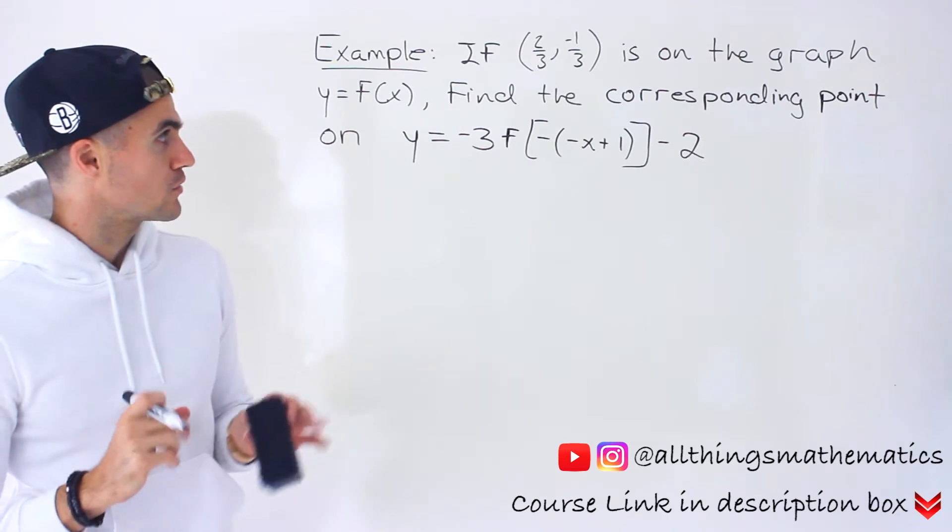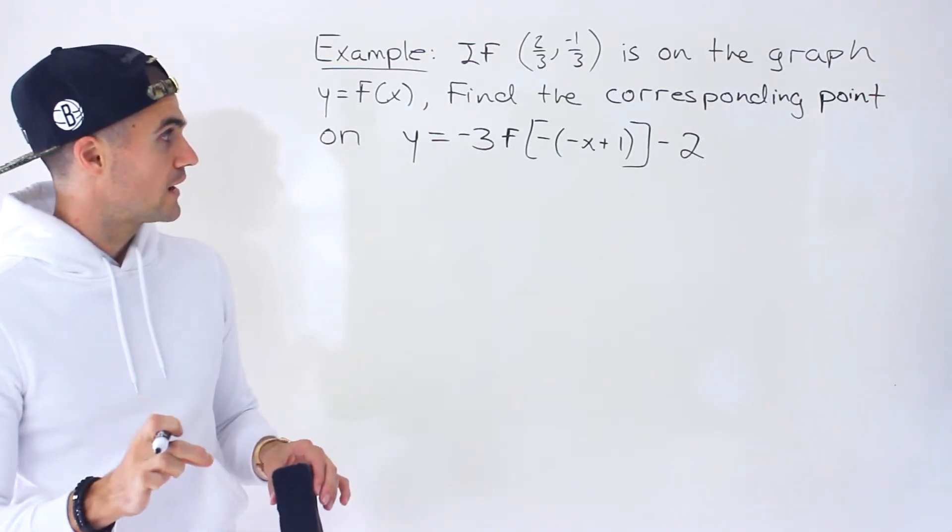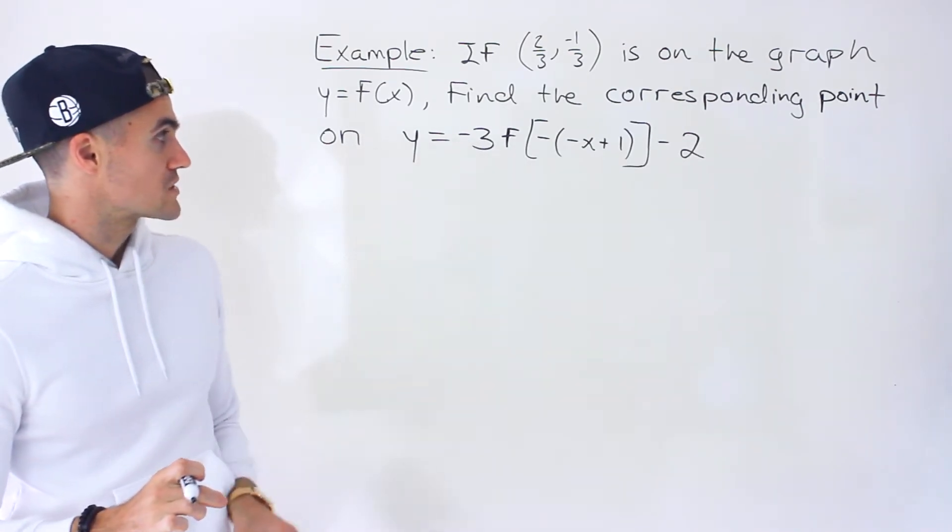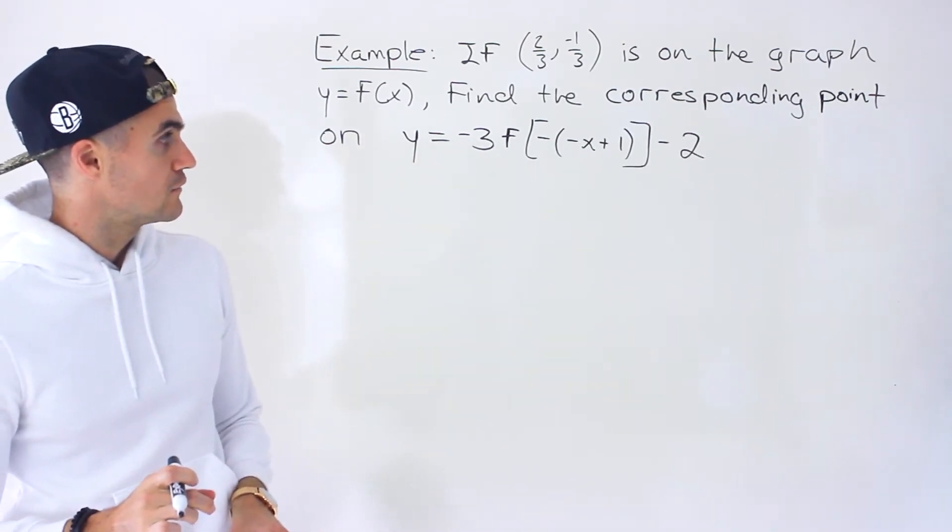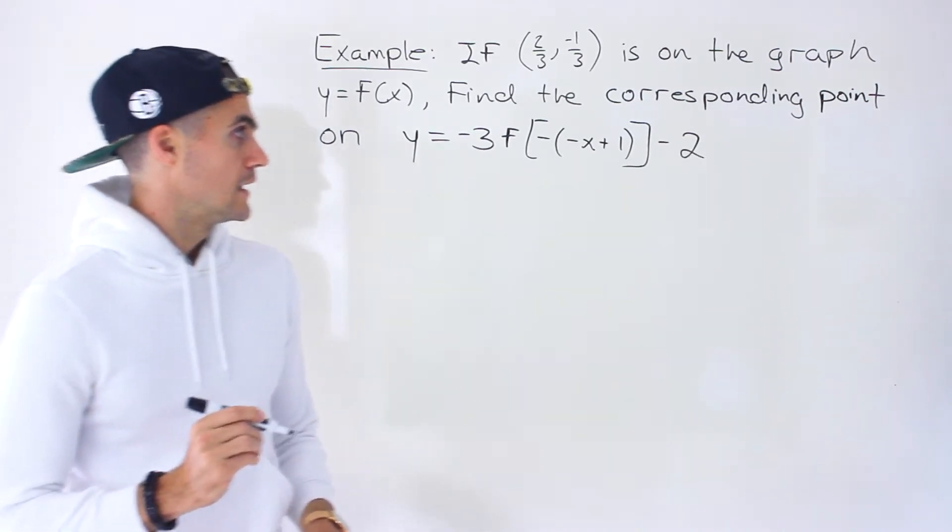So we're told that 2 over 3, negative 1 over 3, that coordinate is on the graph y equals f of x, and we have to find the corresponding point on this graph. y equals negative 3, f of negative bracket negative x plus 1, we close the two brackets, minus 2.